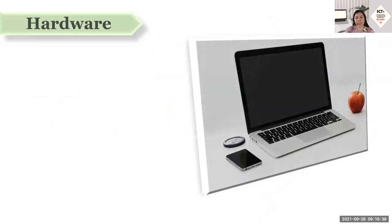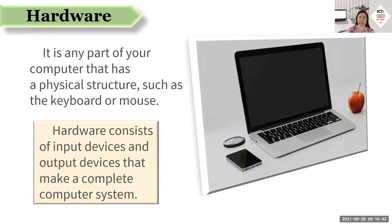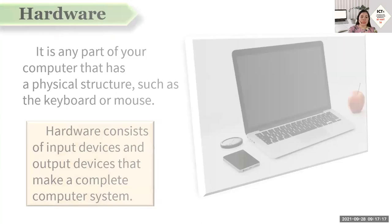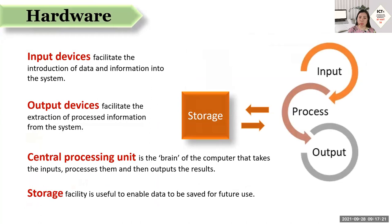In our next videos, we shall be discussing deeply on each part, particularly the hardware. When we speak of hardware, it is any part of your computer that has a physical structure, such as the keyboard or mouse. Hardware consists of input devices and output devices that make a complete computer system. Our hardware are actually classified into four: input devices, output devices, central processing unit, and storage.